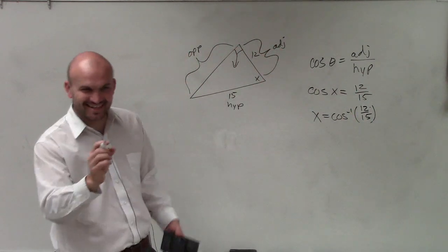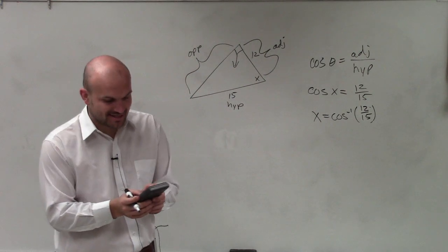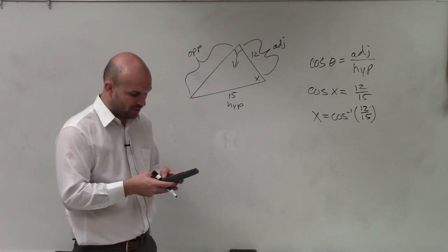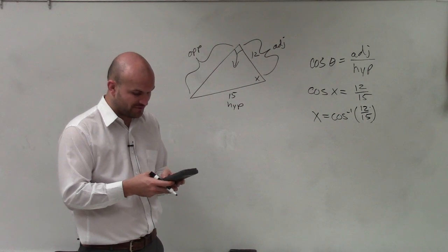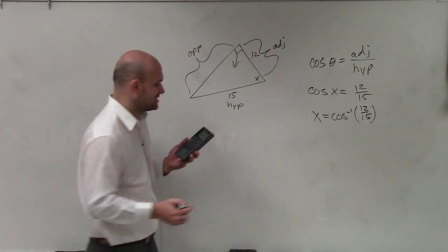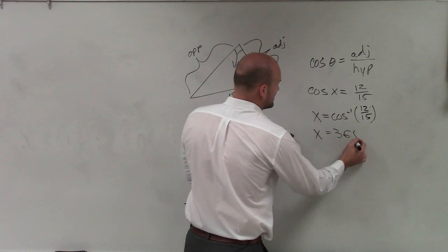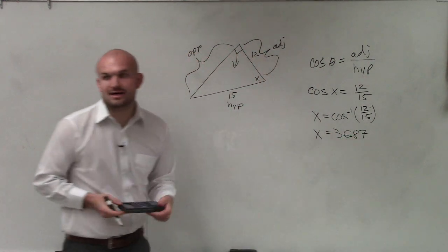No, just to check the problems when he's wrong. So all I type in is I take the second cosine, and then I do 12 parentheses 12 over 15. That's why I got stuck last time. This old calculator, I didn't use parentheses. And therefore, I get x equals 36.87. We'll round to the hundredth in this class.